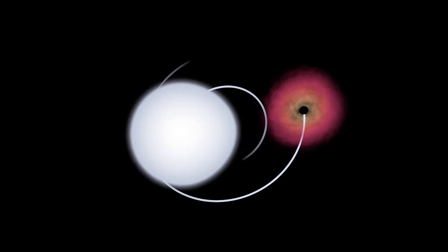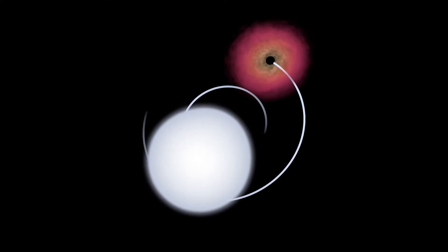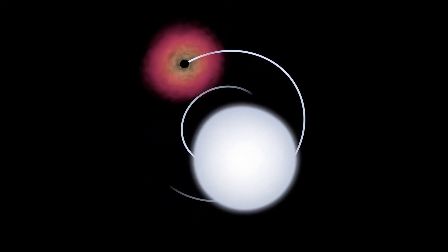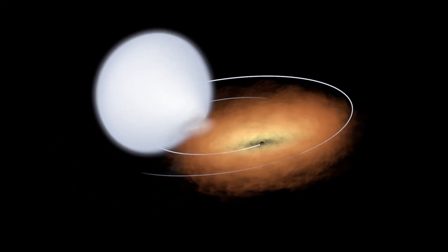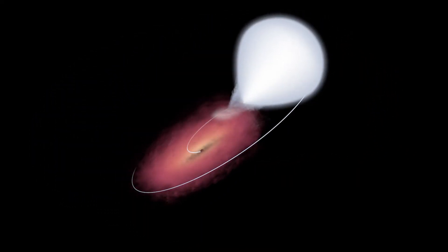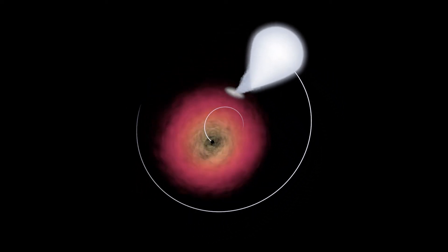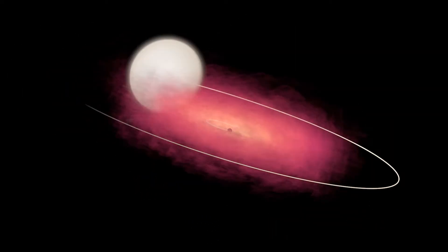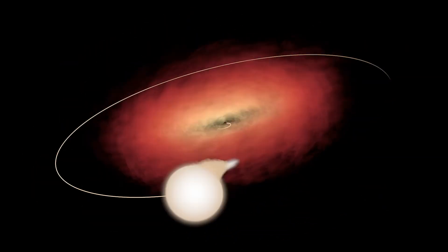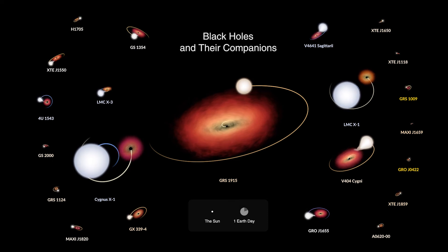The gravitational warping of each star and the differential rotation speed of each accretion disk was mathematically derived from the source data. Each accretion disk was comprised of 2,000 textured particles. It took almost three weeks running across the studio's 100 render farm machines to generate the final videos of the orrery and each black hole system in close-up, generating 27,000 4K final image frames.